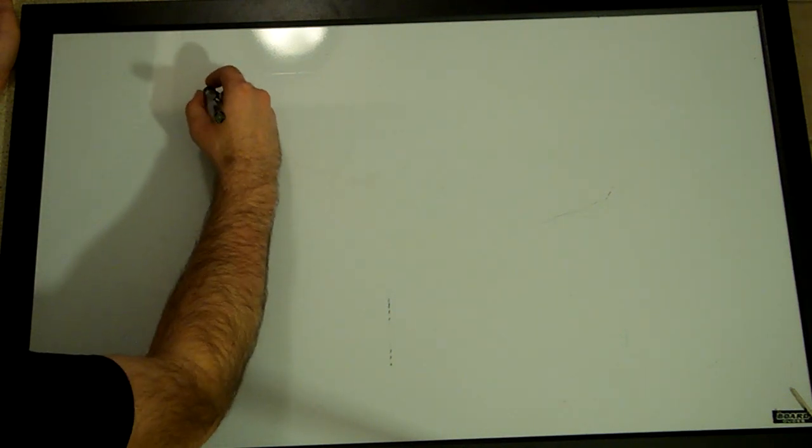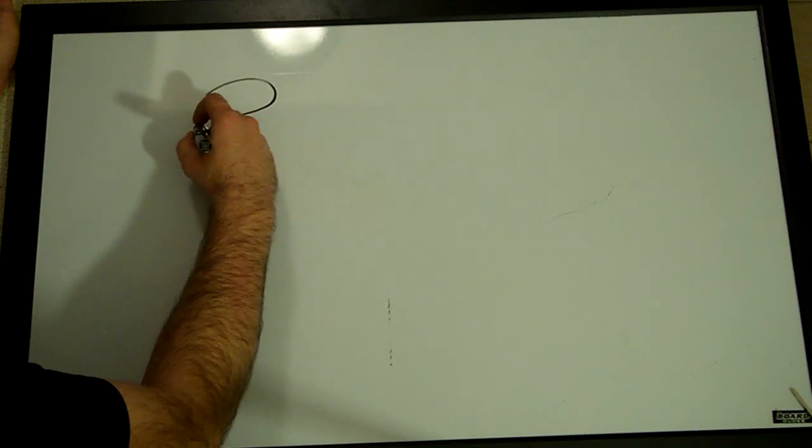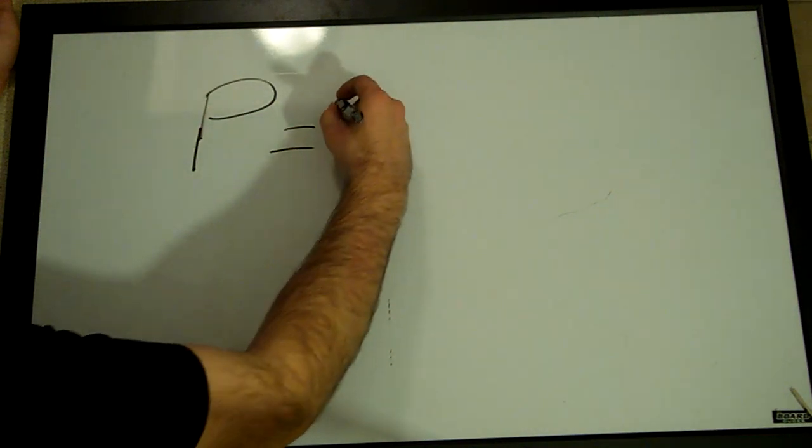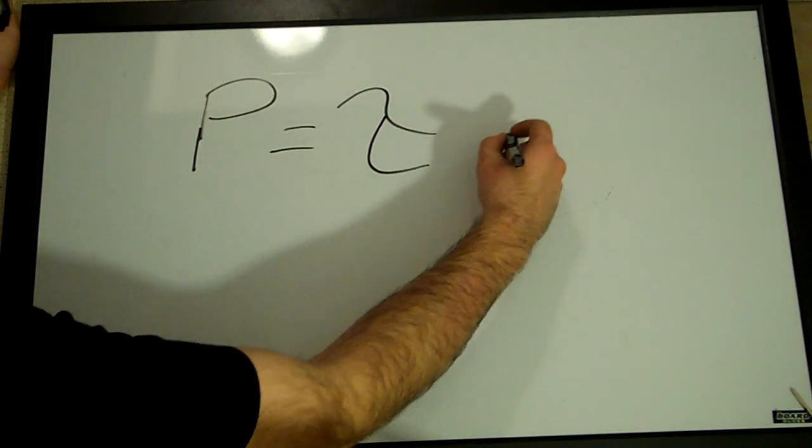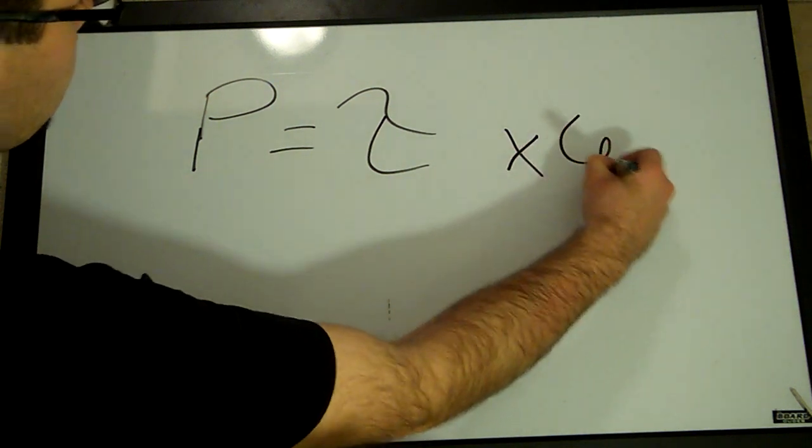Alright, the first thing we need to do is we need to understand what power is. In an SI world, or System International, power is defined as torque cross product omega.